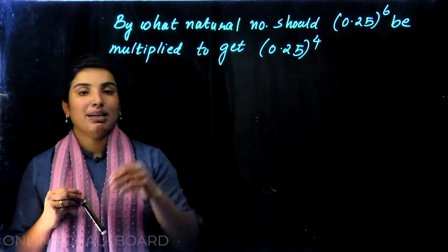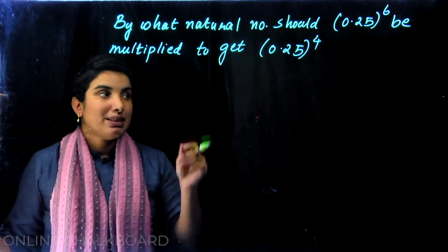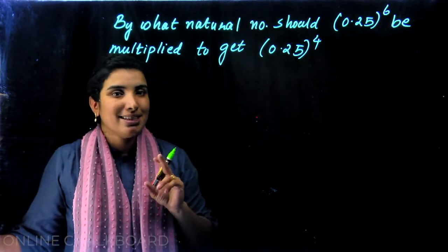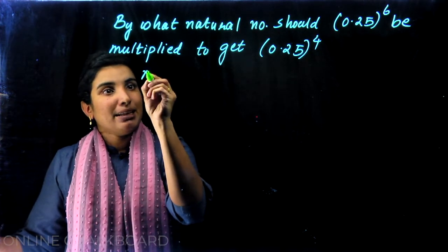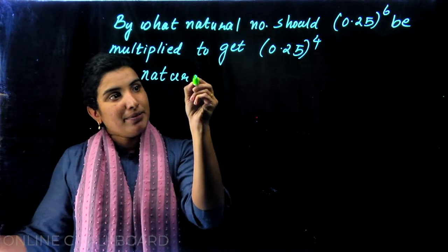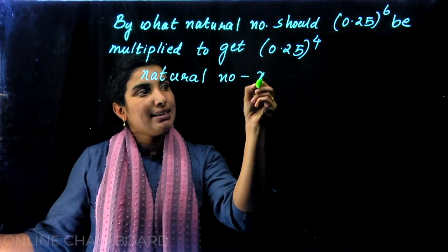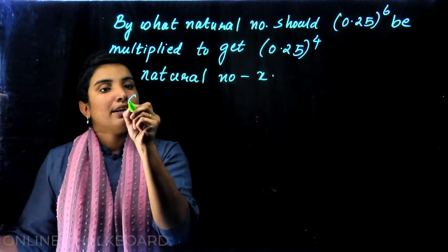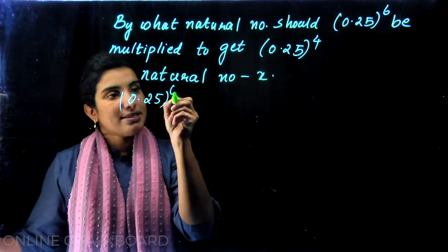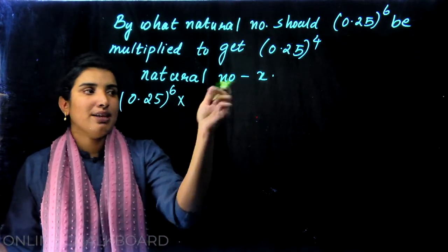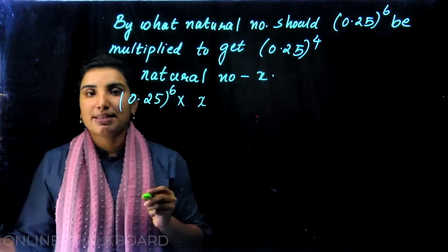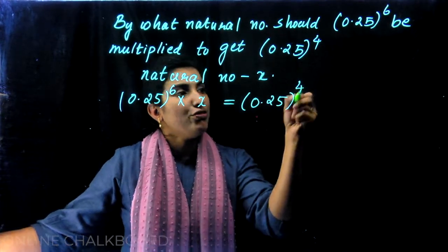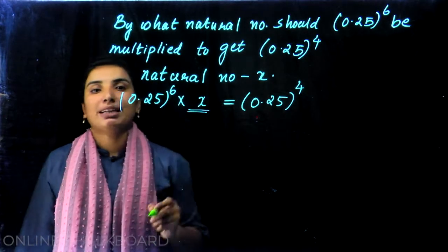We will discuss the counting numbers and how we can do this. By what natural number should 0.25 raised to 6 be multiplied? 0.25 raised to 6 — that natural number is x. If you multiply that, what answer is 0.25 raised to 4? That answer is 0.25 raised to 4. That's why we are talking about the natural number.